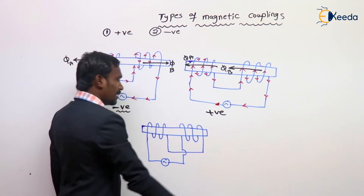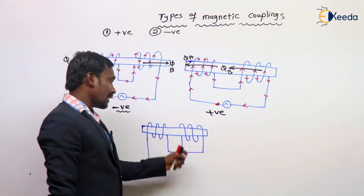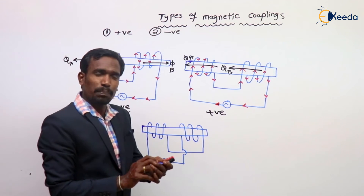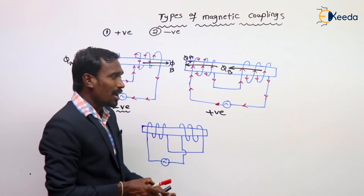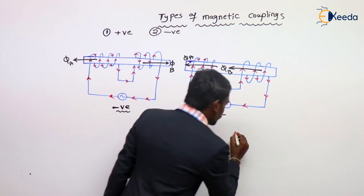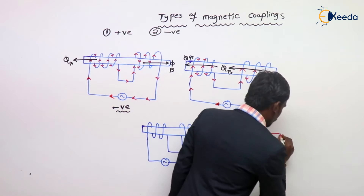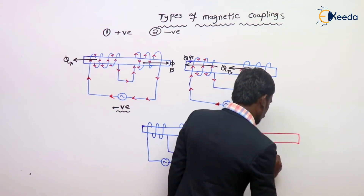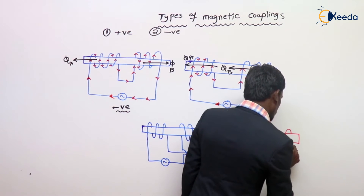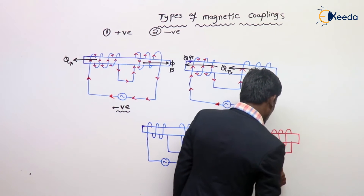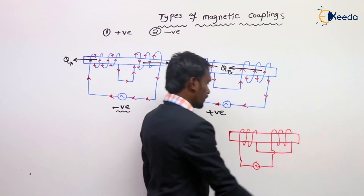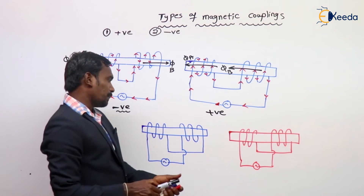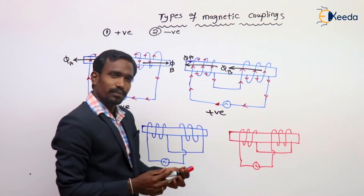This is the first one. Tell me, is this a positive magnetic coupling or negative magnetic coupling? You have to tell me. I will give you another diagram. Now tell me — the first one: positive magnetic coupling or negative magnetic coupling?